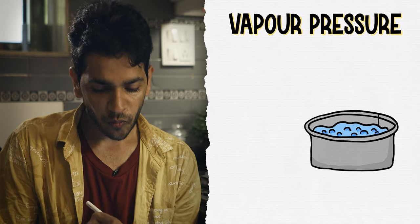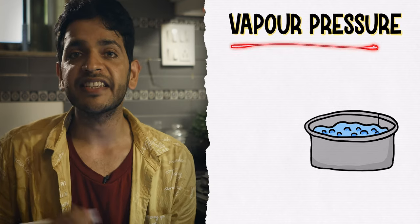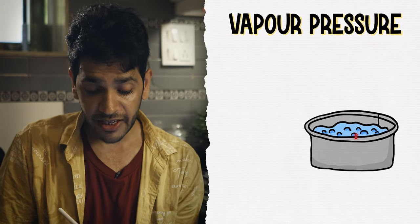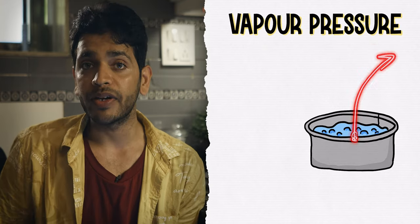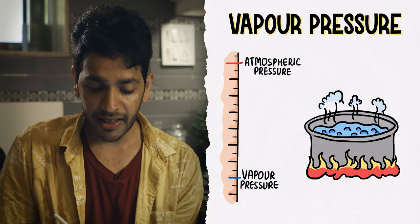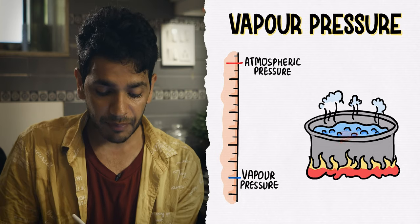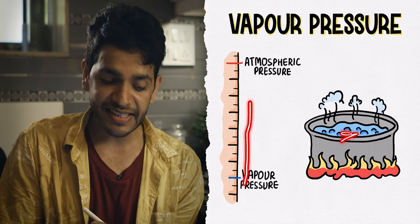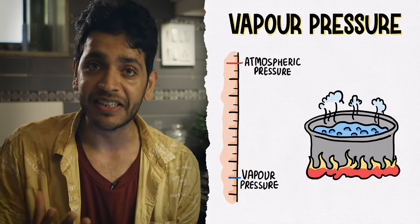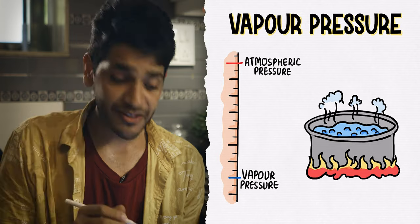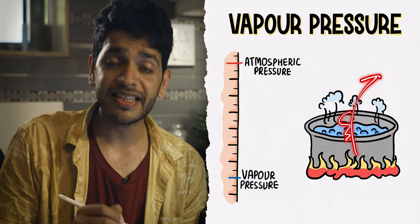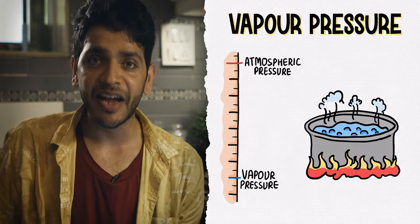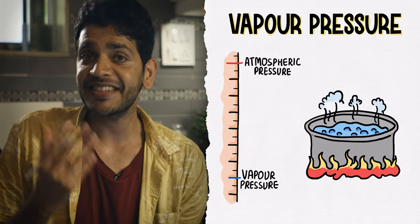Vapor pressure is the tendency of a liquid's molecules to escape the liquid. When we heat a liquid, its vapor pressure increases and reaches atmospheric pressure. That is when the liquid molecules start to escape the liquid rapidly.